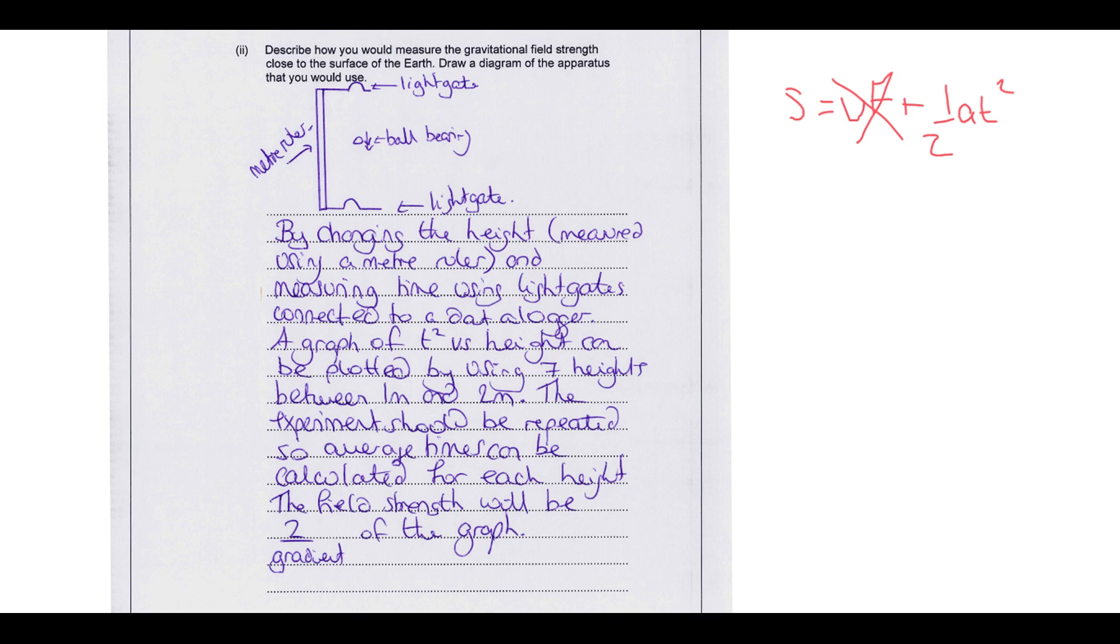Okay, so we're going to use a range of heights, so we're going to use some longer distances to increase the times to reduce the percentage uncertainty, and we would repeat each of the measurements there so we can get an average to get rid of some of the random errors that might crop up in our results. And from our graph, if we calculate the gradient, we can work out essentially what the acceleration due to gravity is, which is also known as the gravitational field strength.